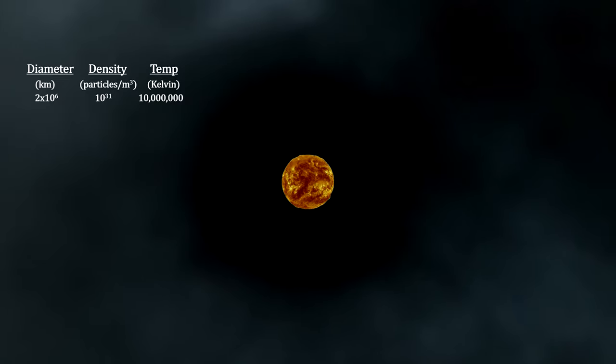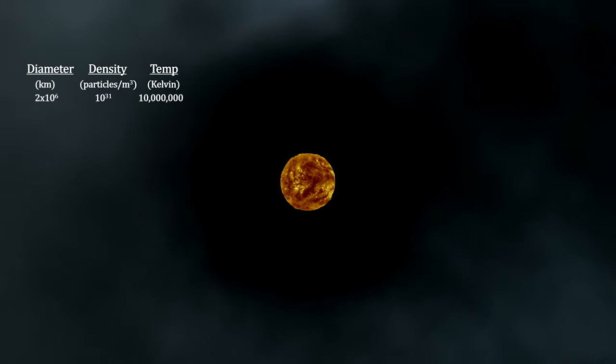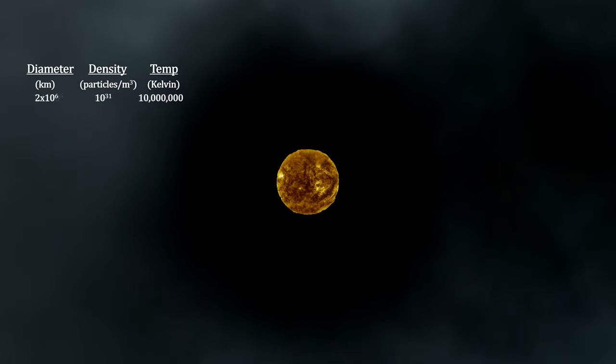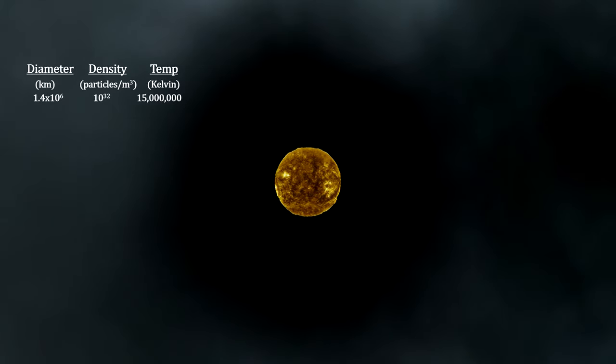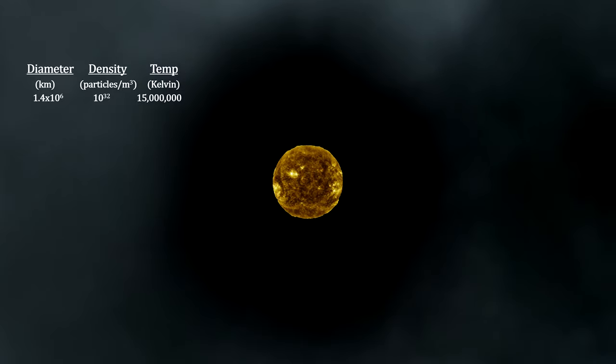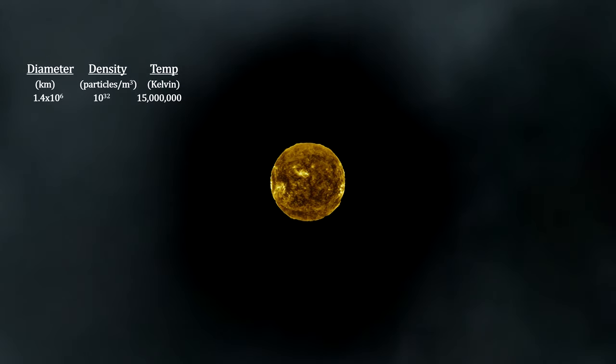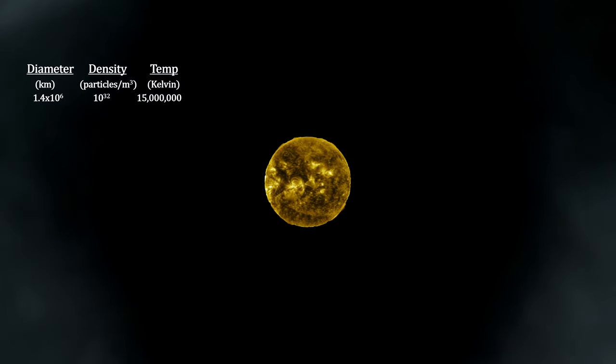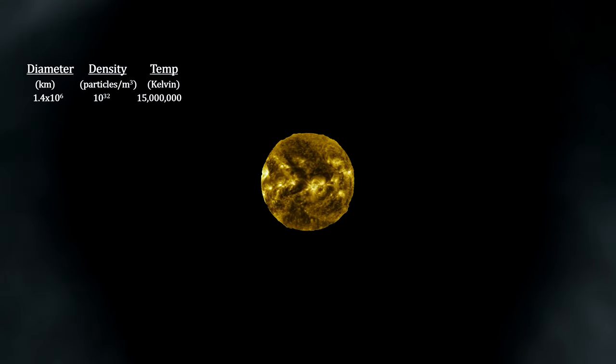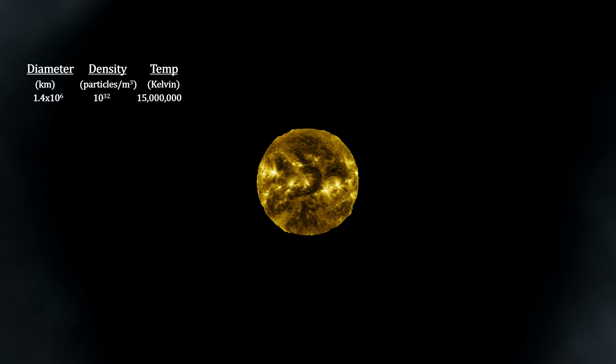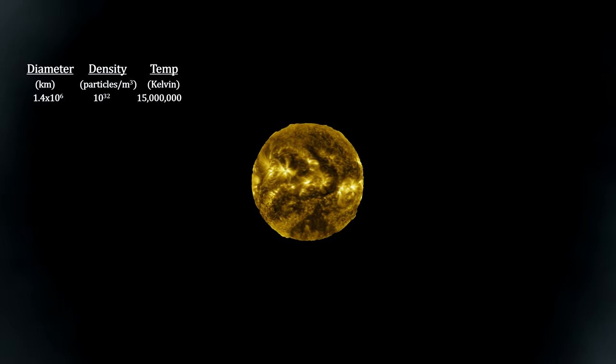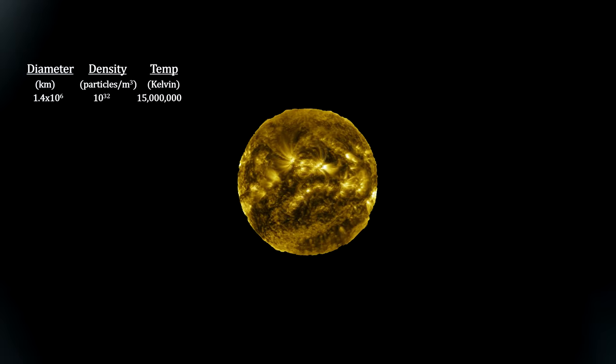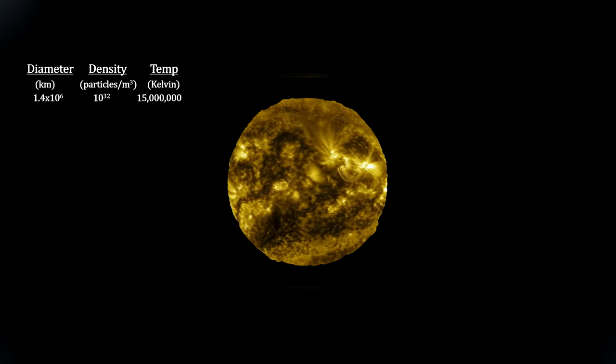This ends mass accumulation and the star settles into hydrostatic equilibrium. At the mass of our Sun, the core temperature reaches 15 million degrees Kelvin. And it has 99.8% of all the collapsing molecular cloud fragment's matter, leaving only 0.2% left over for planets, moons, asteroids, and comets. It is now a main-sequence star.